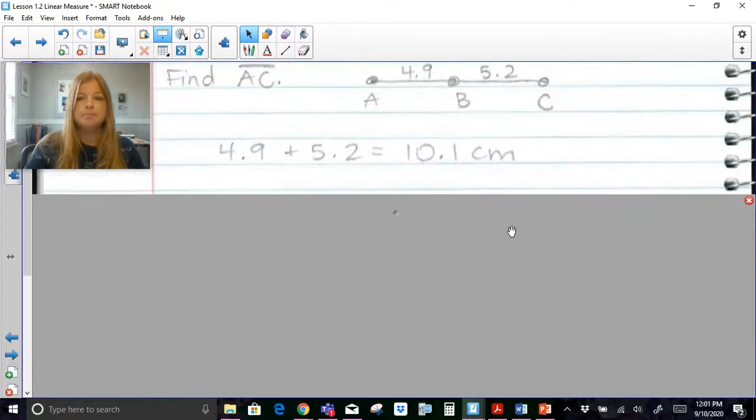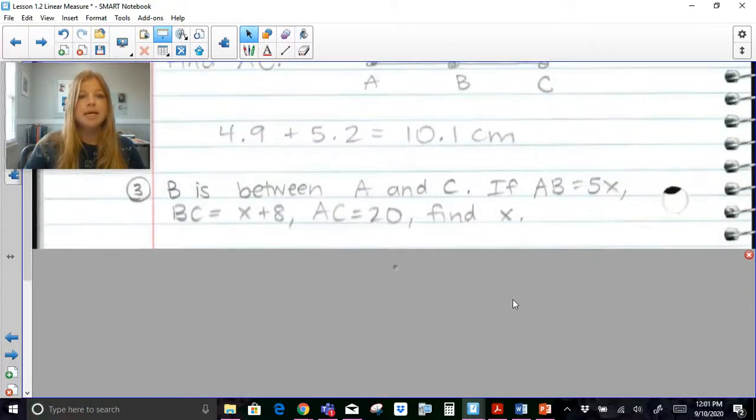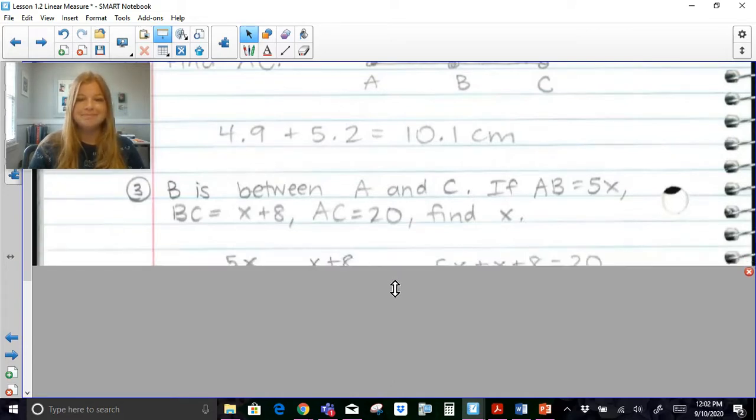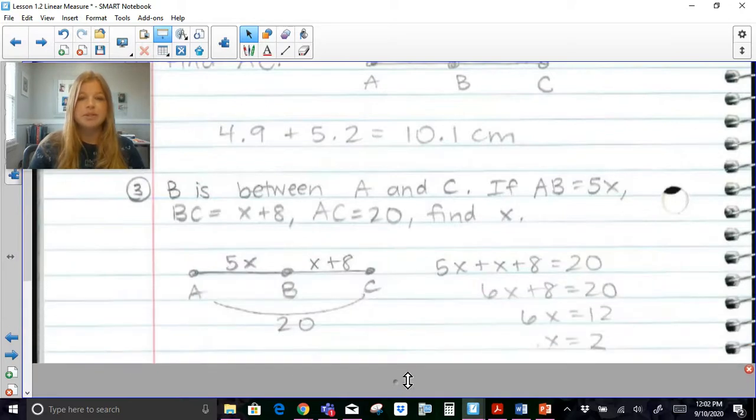This one says B is between A and C. If AB equals 5X, BC equals X plus 8, AC equals 20, find X. So here it does tell you B is between A and C. You can pause right now, draw a diagram and do the solving and then press play when you're ready. Okay this is what your diagram would look like. You have 5X, you have X plus 8, A to C is equal to 20. So 5X plus X plus 8 equals 20, and through your solving your equation you should be able to get X equals 2.